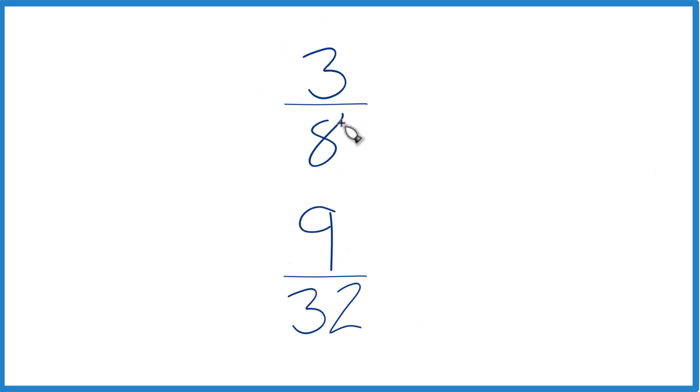One way to do it: divide 3 by 8 on a calculator to get a decimal, then divide 9 by 32 to get a decimal. And so you can then see if 3/8 is greater or less than 9/32.